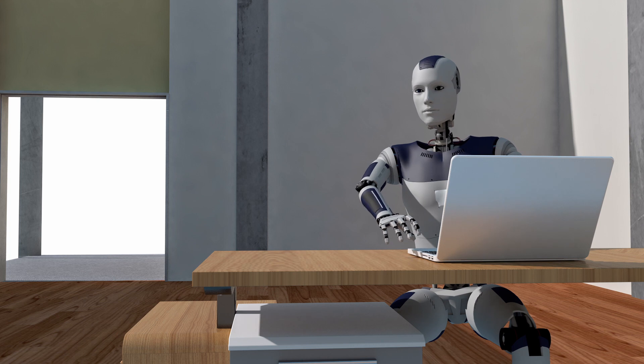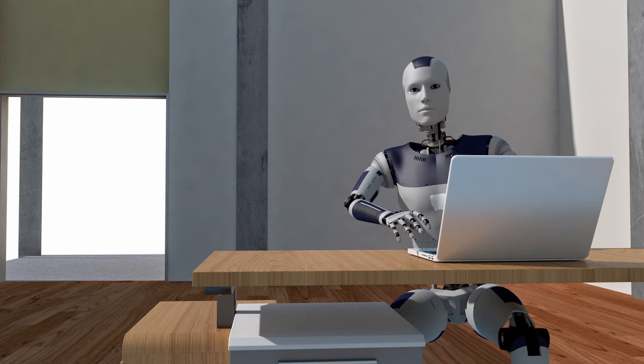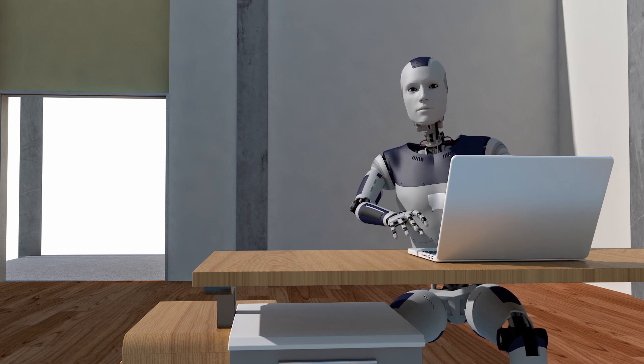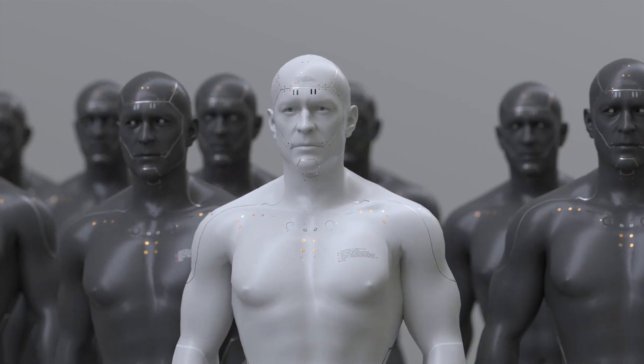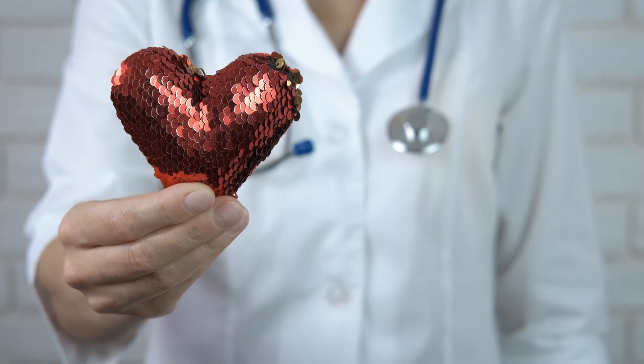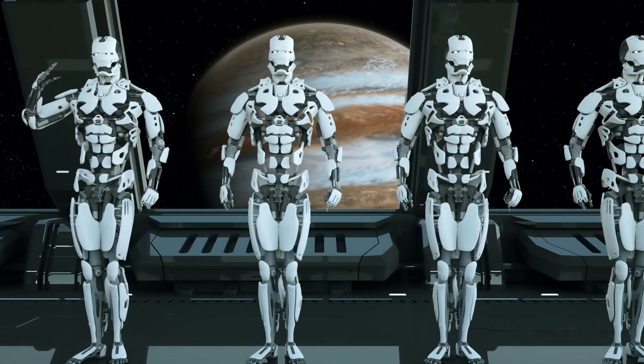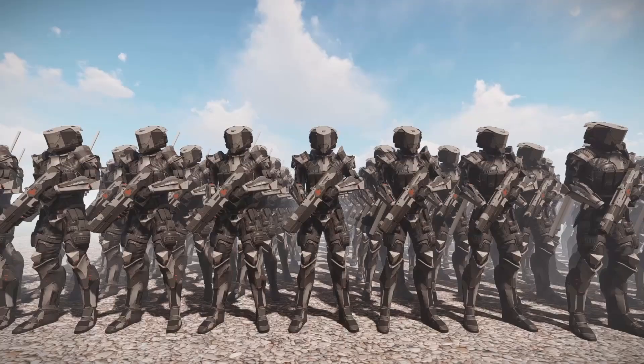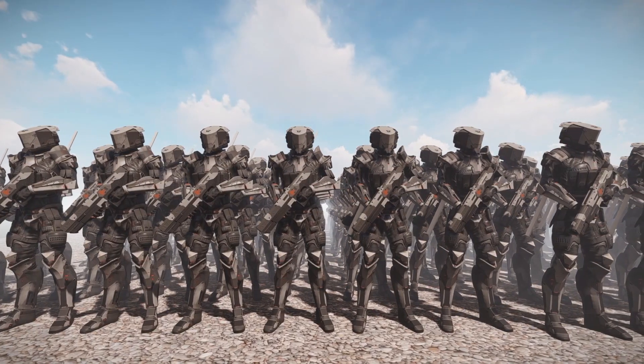As ASI becomes more advanced, we could see the development of humanoid robot species that can interact with humans more naturally. Humanoid robots could be designed to perform a wide range of tasks, including customer service, entertainment, and healthcare. Humanoid robots could also be used to explore space and perform tasks that are too dangerous or difficult for humans.